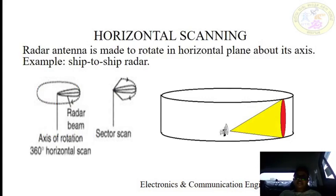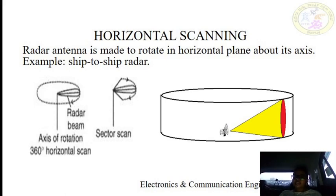In the horizontal scanning method, the radar antenna is made to rotate in a horizontal plane about its vertical axis, as shown in the figure. Horizontal scanning is the simplest, but it has a disadvantage of scanning in the horizontal plane only. This type of scanning is mainly used in searching the horizon, for example, ship-to-ship radar.